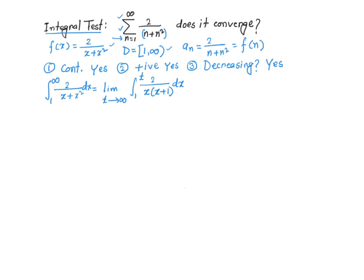There is a bit of side work we need to do — we have to break it into two pieces using partial fractions. So, 2 over x times x plus 1 equals A over x plus B over x plus 1. Multiplying both sides by x times x plus 1, on the left we get 2, and on the right we get A times x plus 1 plus B times x.